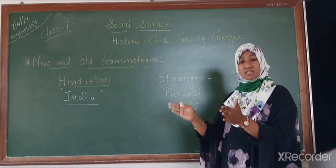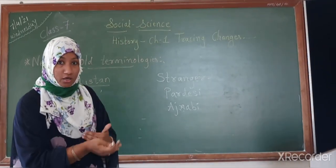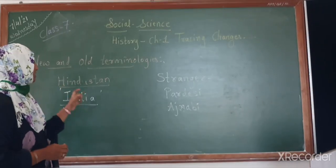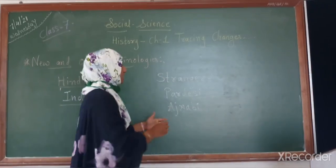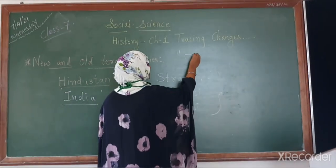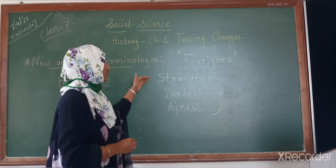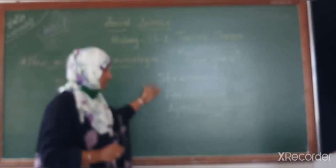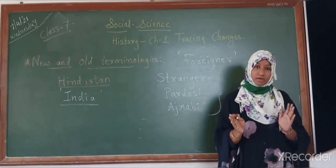These are just some examples to show you how old terminologies are changing into new terms. The word Hindustan is now termed as India. The foreigner can be known in three terms with different languages: foreigner in English, stranger also in English, Pardesi in Hindi, and Ajnabi in Persian language.